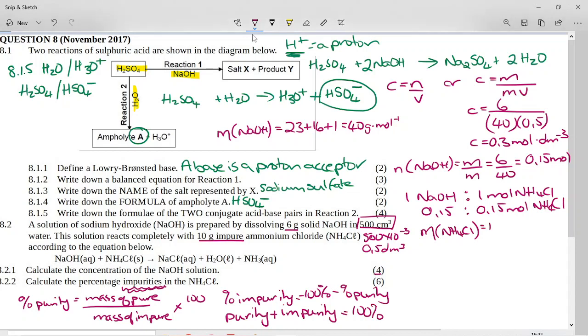It's going to be the mass of nitrogen from the periodic table, 14, plus 4 hydrogens. Hydrogen is 1, so 4 times 1 is 4, plus chlorine, which is 35 and a half. And this adds up to 53 and a half, if I'm not mistaken, grams per mole.